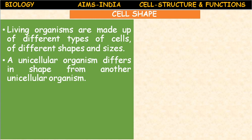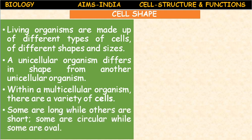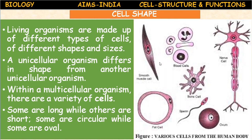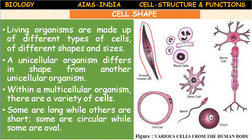A unicellular organism differs in shape from another unicellular organism. Within a multicellular organism there are also a variety of cells — some are long while others are short, some are circular while some are oval in shape. Here you can see different shapes: a muscle cell is conical or spindle-shaped. This is the cell of smooth muscles, which are present in internal organs like the intestine. The nucleus is present and it is spindle or oval in shape. Blood cells are also different shapes.